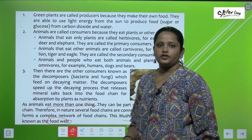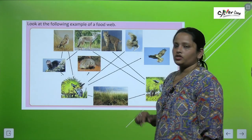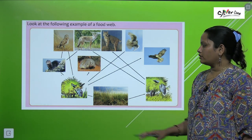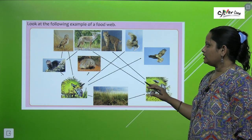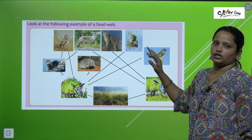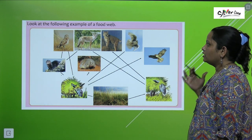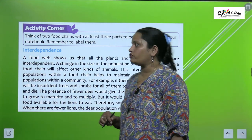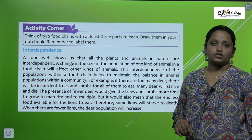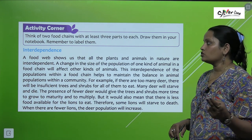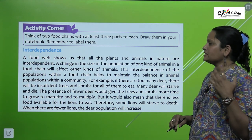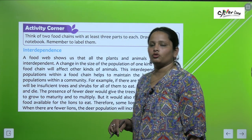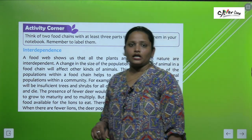This network is known as the food web. Here, children, you can see examples of the food web — the grass is eaten by these animals, and those animals are eaten by the animals at the top. Now there is an activity: you have to think of two food chains with at least three parts each, draw them in your notebook, and remember to label them.